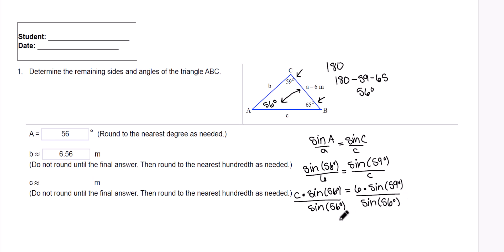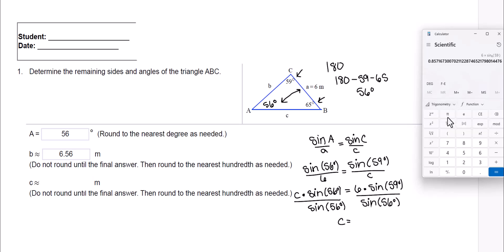Alright, now to figure out C, I'm going to grab my calculator again. The first thing we're going to do is the numerator. I'm going to take 6 times, now I have to put the degrees in first, 59 degrees. And then pick sine, and we have to click equals.